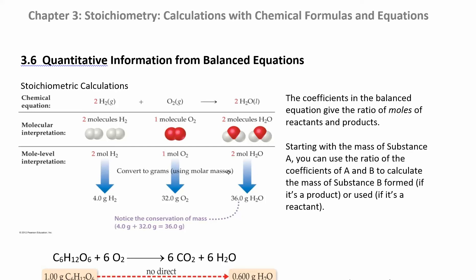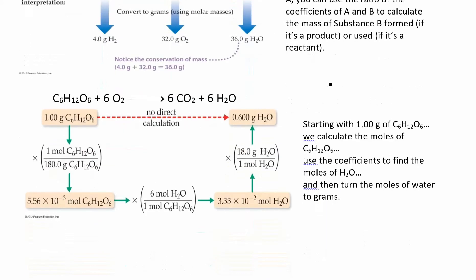We're going to use that mole interpretation. What you can't do is compare directly from grams to grams — I can't say if I have two grams of hydrogen I'm going to make two grams of water. I need to convert from grams to moles, then compare moles to moles, then convert from moles to grams again. Think of it like a molar mass sandwich.